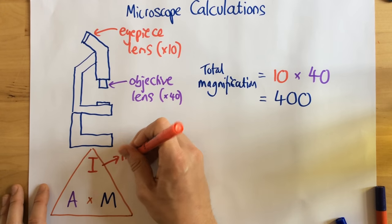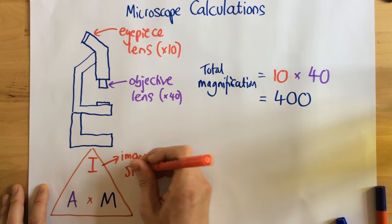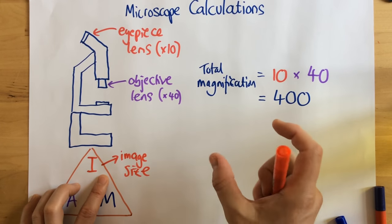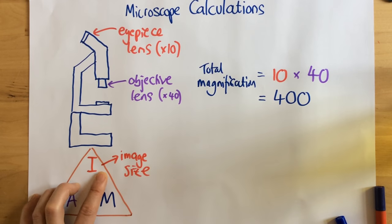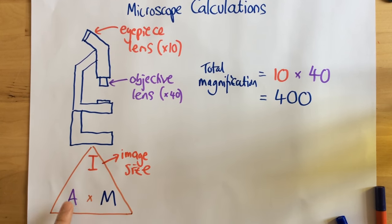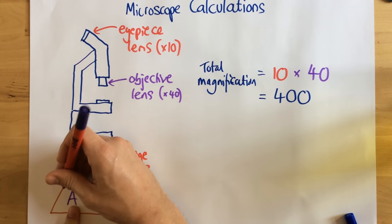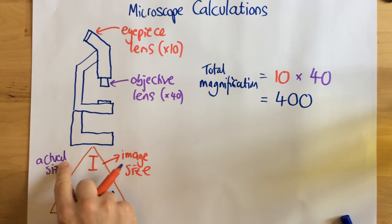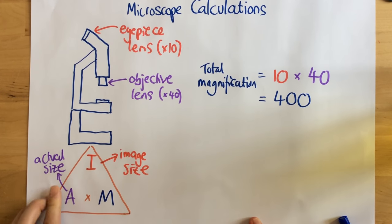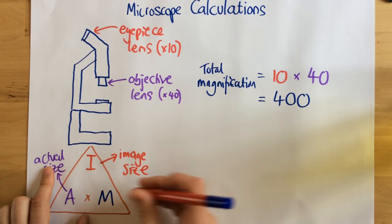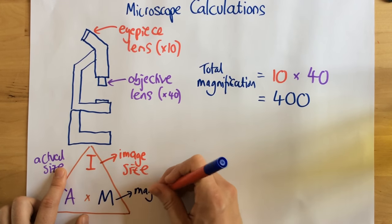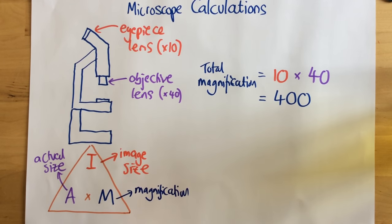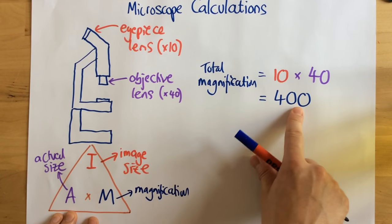Now, what this stands for is this: I stands for image size. Now, what that means is how big is the image that we've, how big is the image once viewed? Not how big is it in real life, because A stands for actual size. So this is how big the thing is we're looking at in real life. And finally, M stands for magnification. So what that means is how many times is that image being magnified? How many times bigger is it?